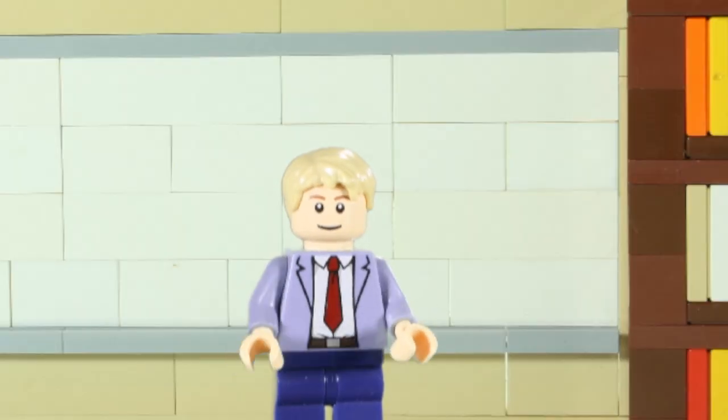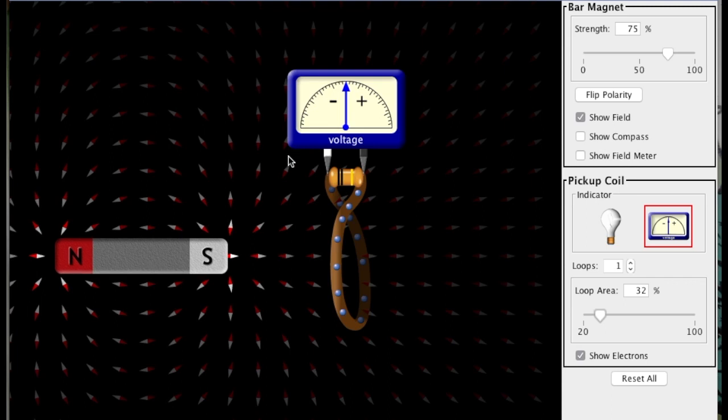Let's take a quick look at the behavior of solenoids using a FET simulation. We can start with a brief summary of Faraday's observations. I have a solenoid attached to a meter and a magnet off to the side. The blue balls represent electrons in the solenoid.